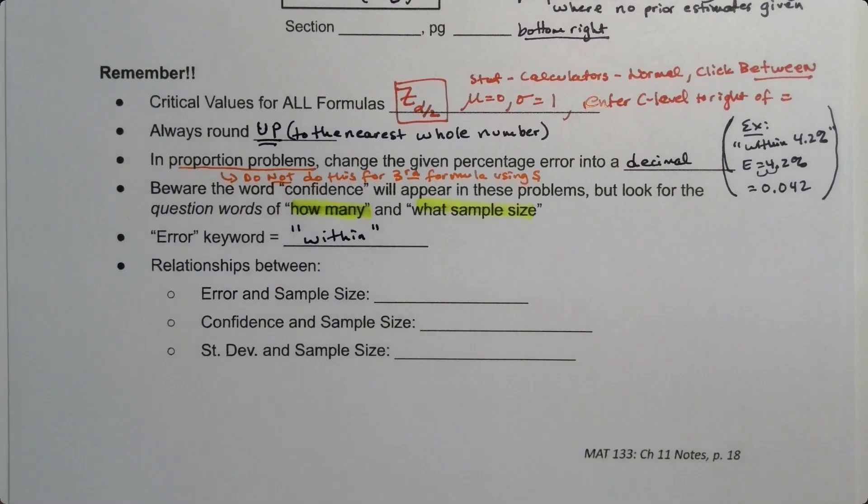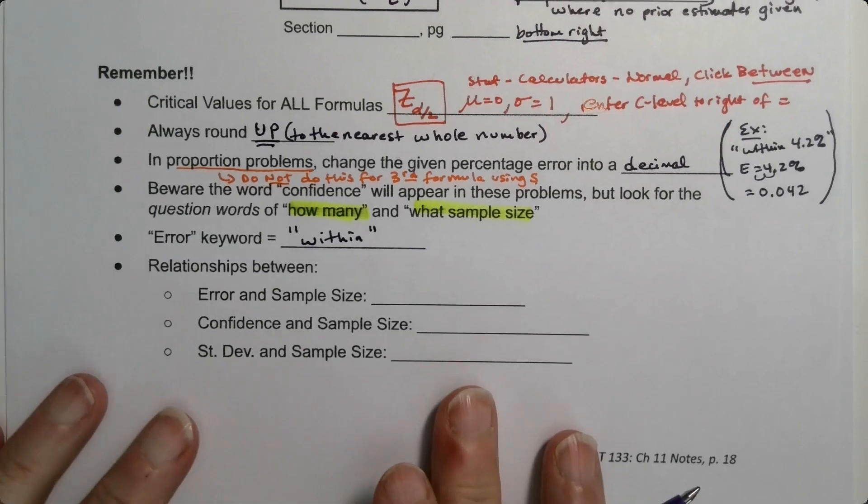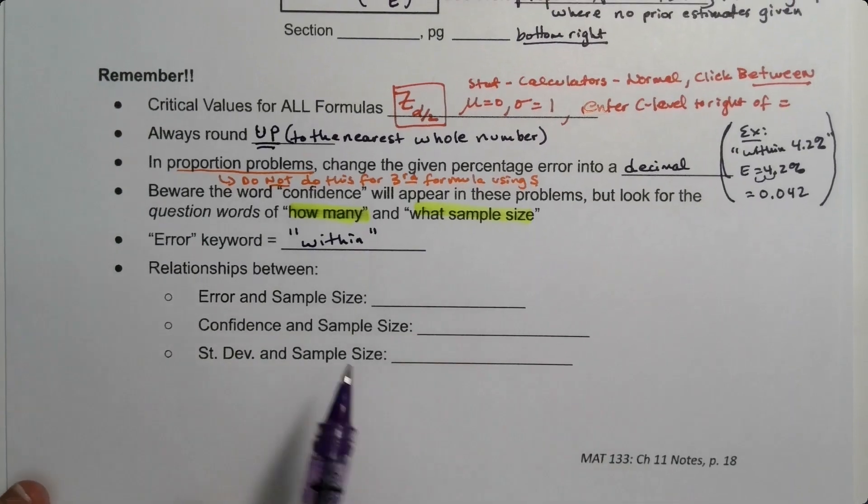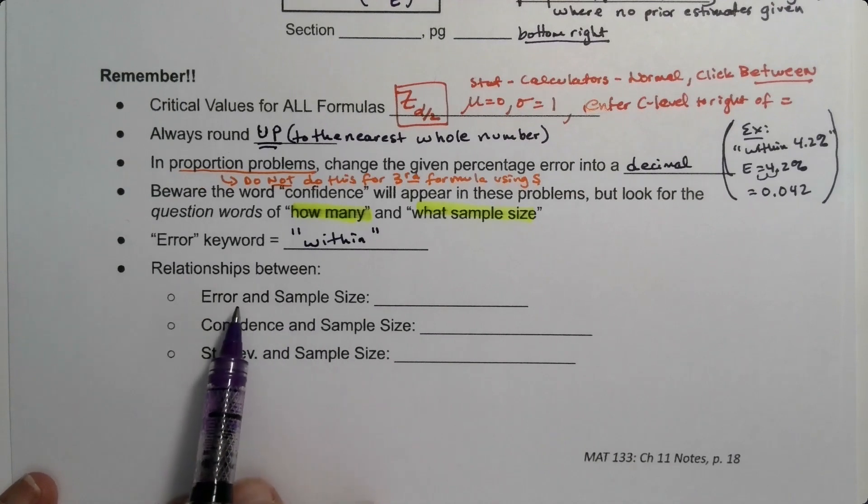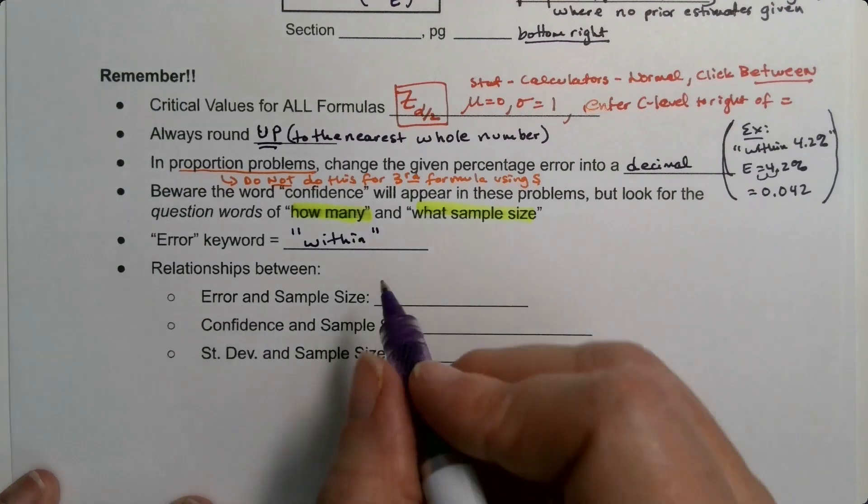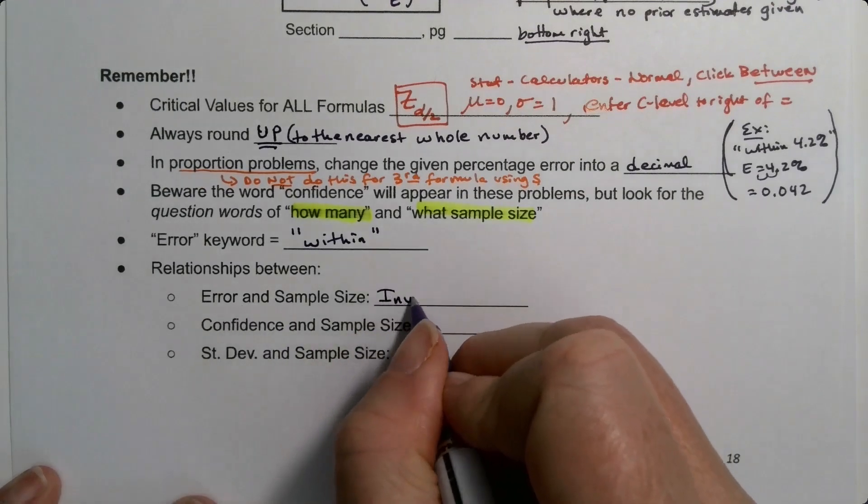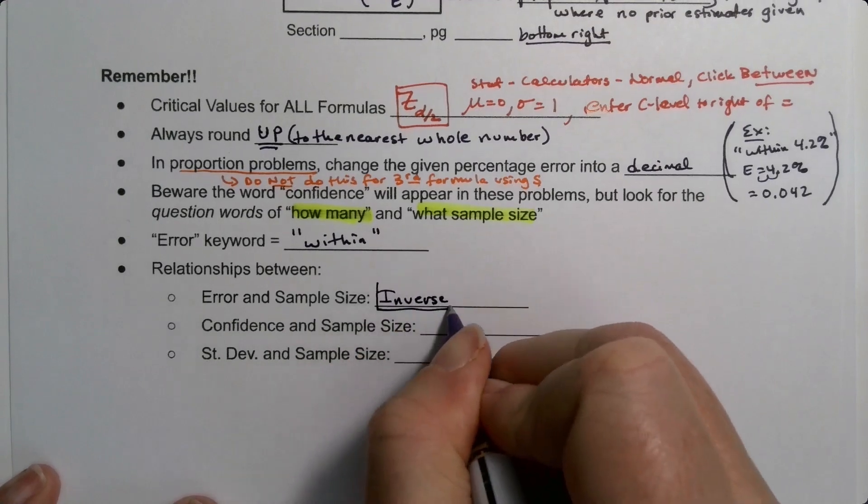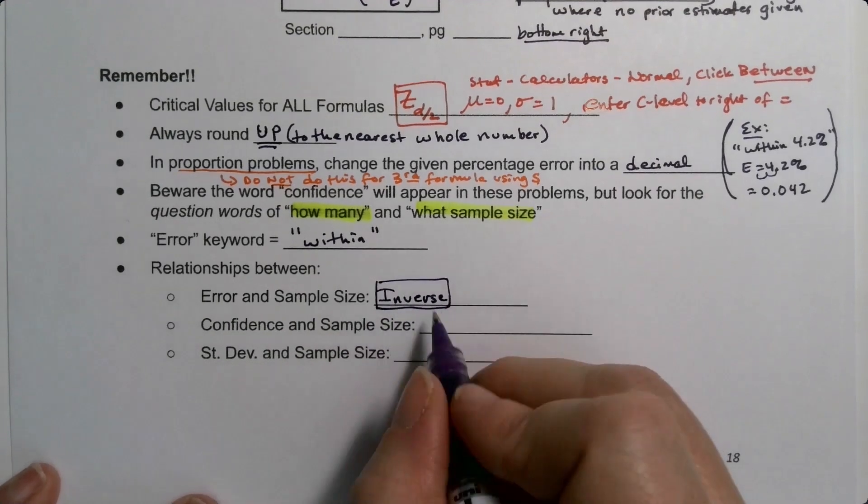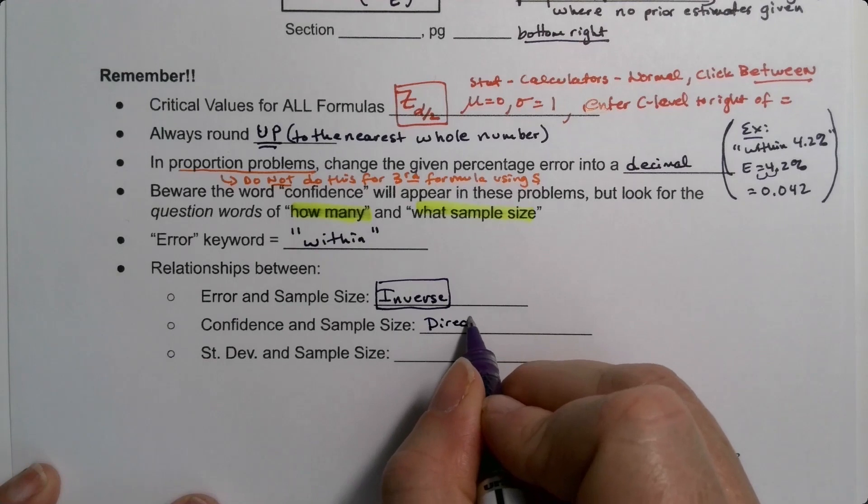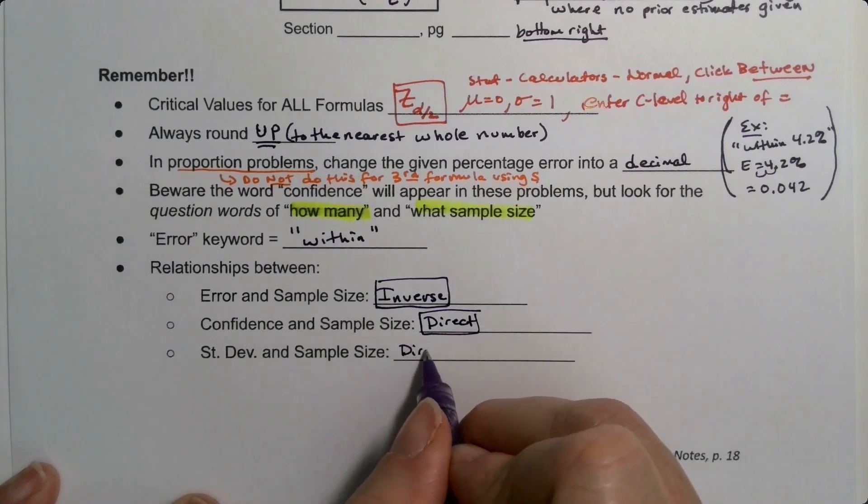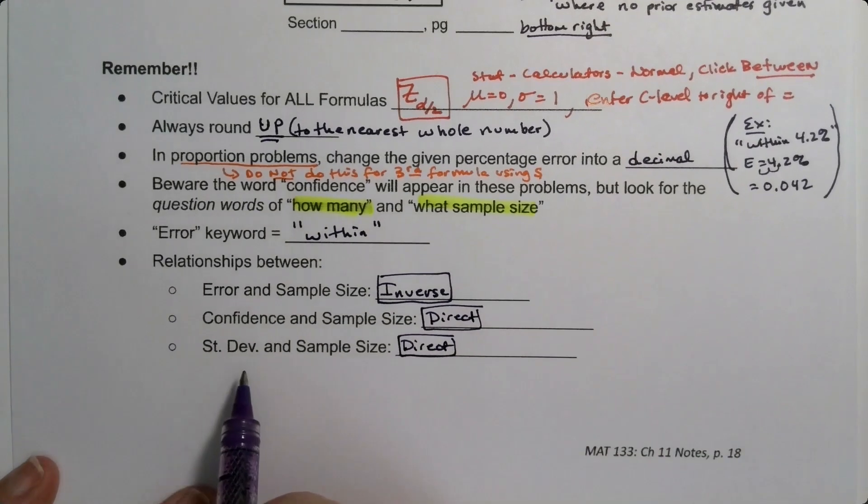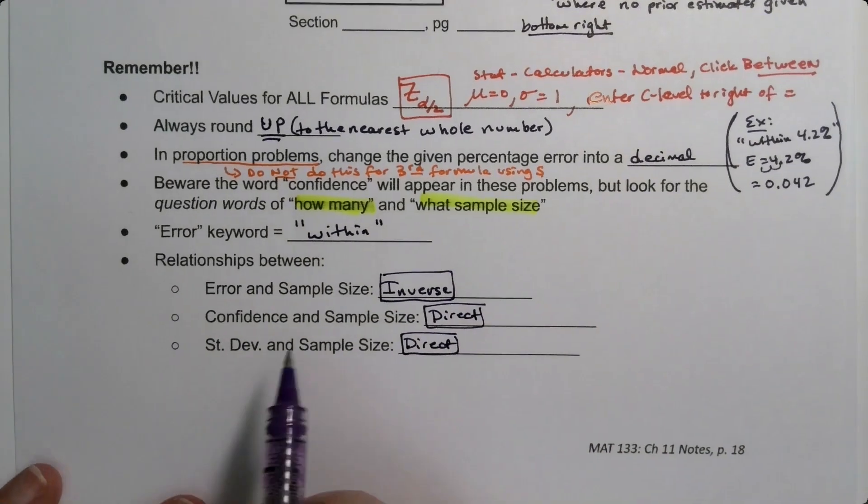Last but not least, as with confidence intervals, there are some relationships we want to keep in mind. They're kind of a variation on one we already learned on a previous page. That there's an inverse relationship between sample size and error. And there's a direct relationship between sample size and confidence, and a direct relationship between standard deviation and sample size.